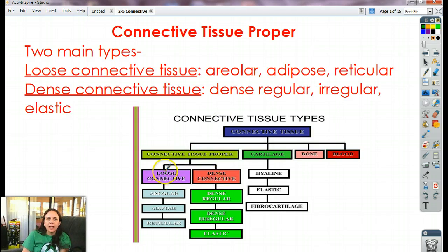Loose connective is broken into three categories: areolar, adipose, and reticular. Dense connective includes dense regular, dense irregular, and elastic. Cartilage has hyaline, elastic, and fiber cartilage. Bone and blood, thankfully, not so much.